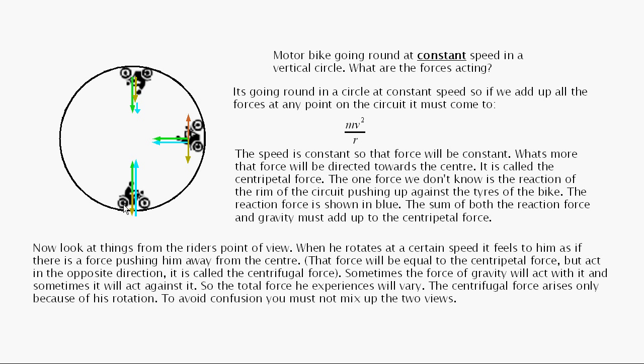So what forces do we know? Well, we know there's a force due to gravity acting downwards. We know there's a reaction force from the road, or the track surface coming upwards. Now look at things from the rider's point of view. As you climb up here, you'll gradually start to slow down as gravity starts to pull against you. So because I've said you're going around at constant speed, as you start to climb, you have to open the throttle a little bit to keep your speed constant. The reaction force is shown in blue. The amount of force is equal to the centripetal force, but acts in the opposite direction. It's called the centrifugal force. Sometimes the force of gravity will act with it and sometimes against it, because of his rotation. To avoid confusion you must not mix up the two views.